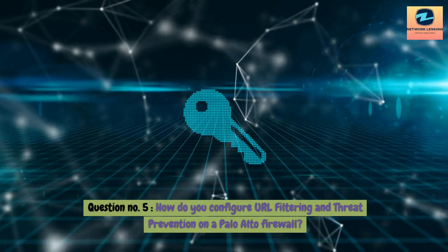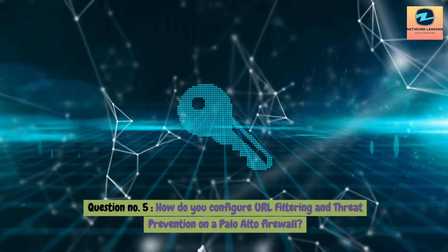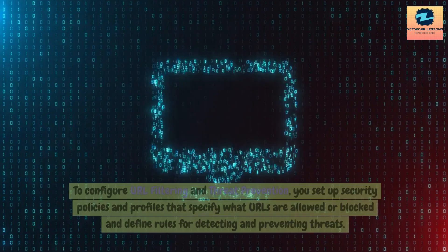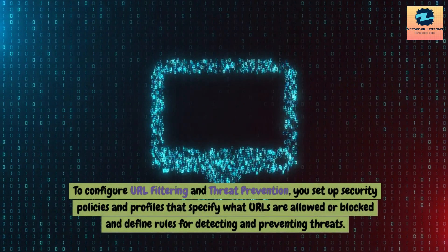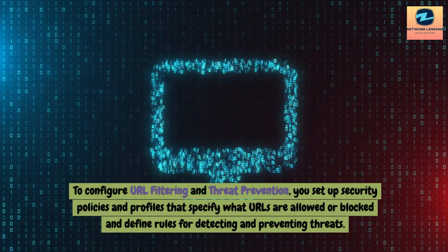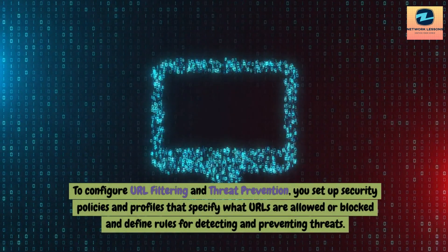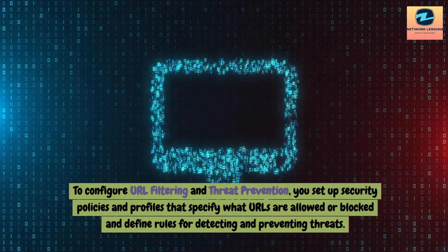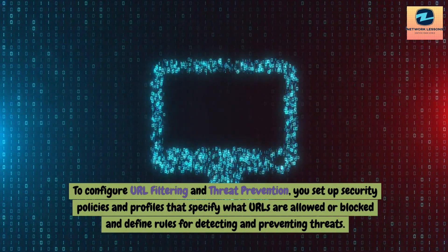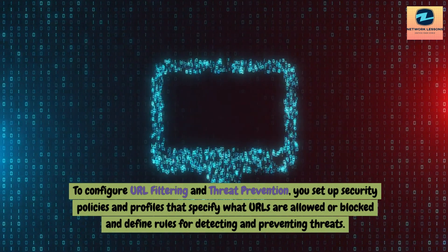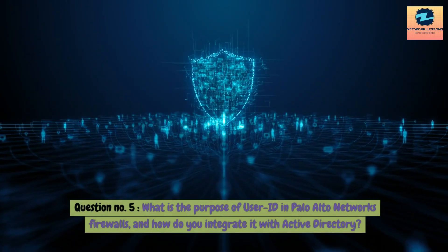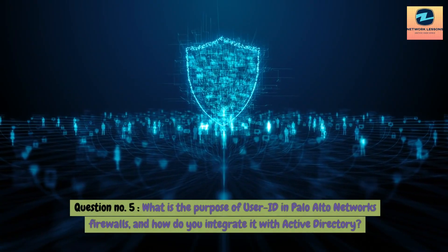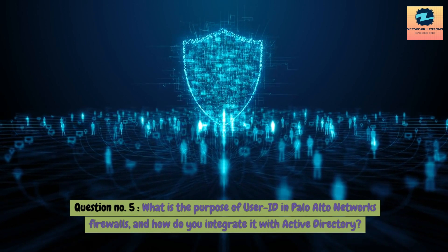Question 5: How do you configure URL filtering and threat prevention on a Palo Alto firewall? Answer: To configure URL filtering and threat prevention, you set up security policies and profiles that specify what URLs are allowed or blocked and define rules for detecting and preventing threats.